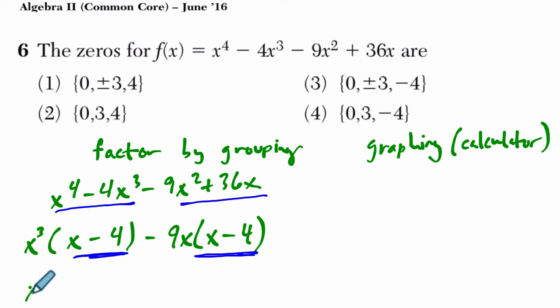And I get x, and then I'm going to get minus 4, because negative 9x times negative 4 is positive 36x. And when I look at this, I notice this term right here has a factor of x minus 4, and so does this. So I can rewrite it as x cubed minus 9x, that binomial, times its common factor.